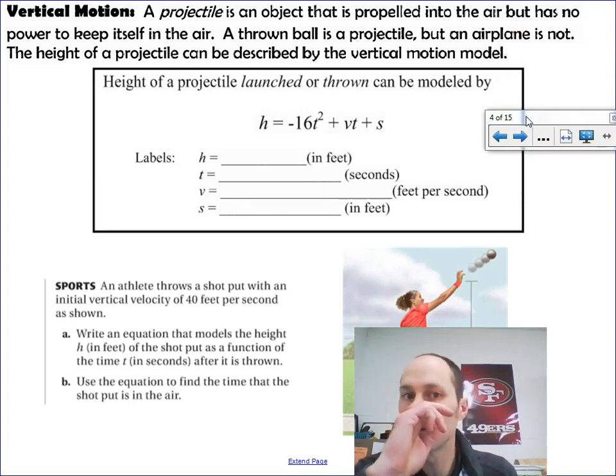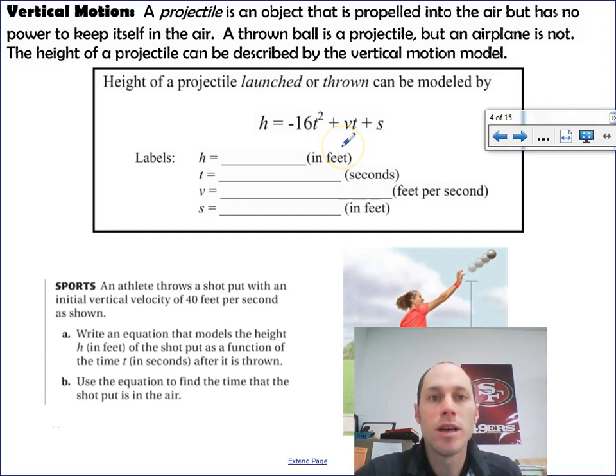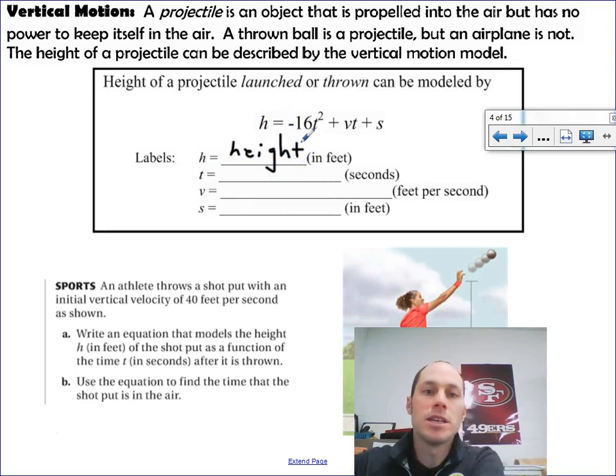Let's take a look at a vertical motion model. If you throw something up in the air, you know a couple things are going to happen. Gravity is going to pull that thing down, and however fast you throw it will have an effect. And wherever that object starts will have an effect. As we take a look at projectiles, those are objects propelled into the air but can't keep themselves in the air, such as a thrown ball. So we use this vertical motion model. The height in feet is h, and we have three parts to this. The first part is gravity. Gravity pulls down on it, that's why that's negative. And the initial velocity of the object thrown up pushes it up plus the height.